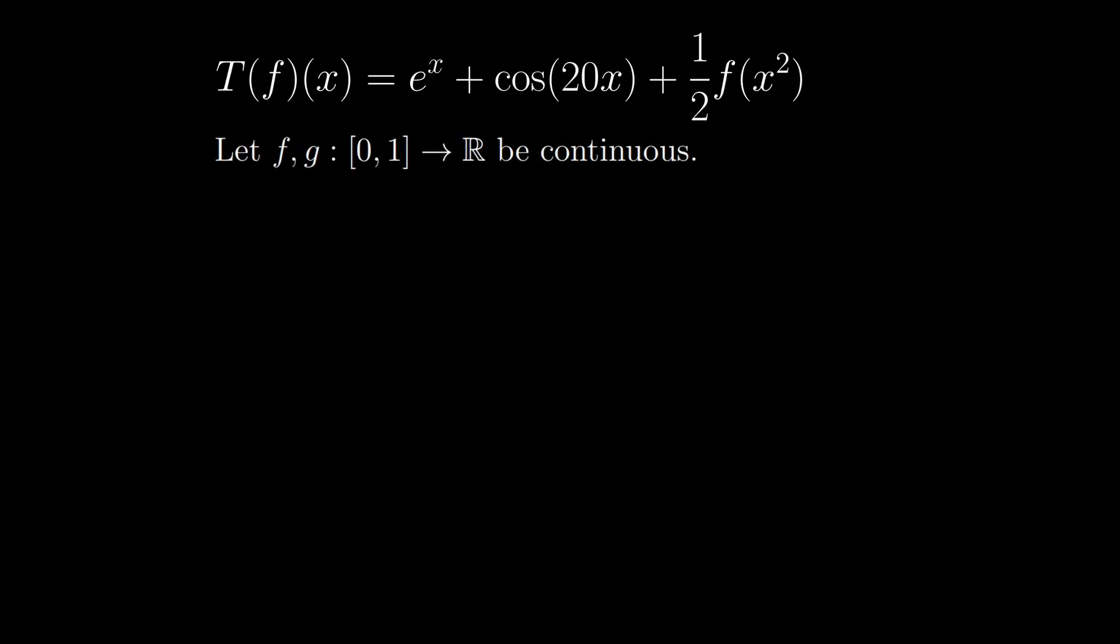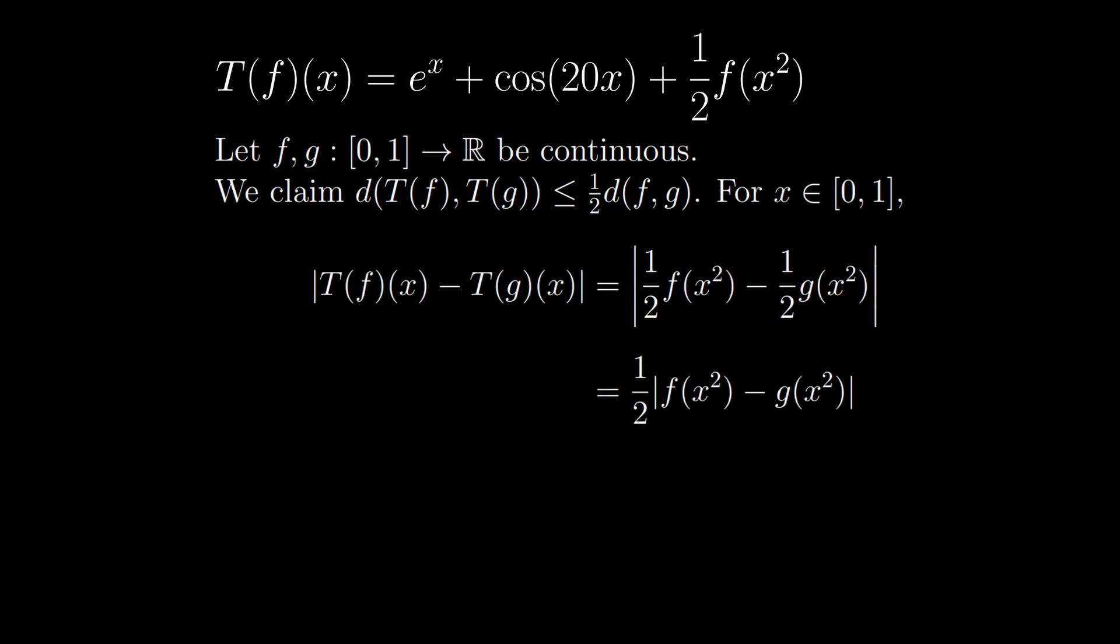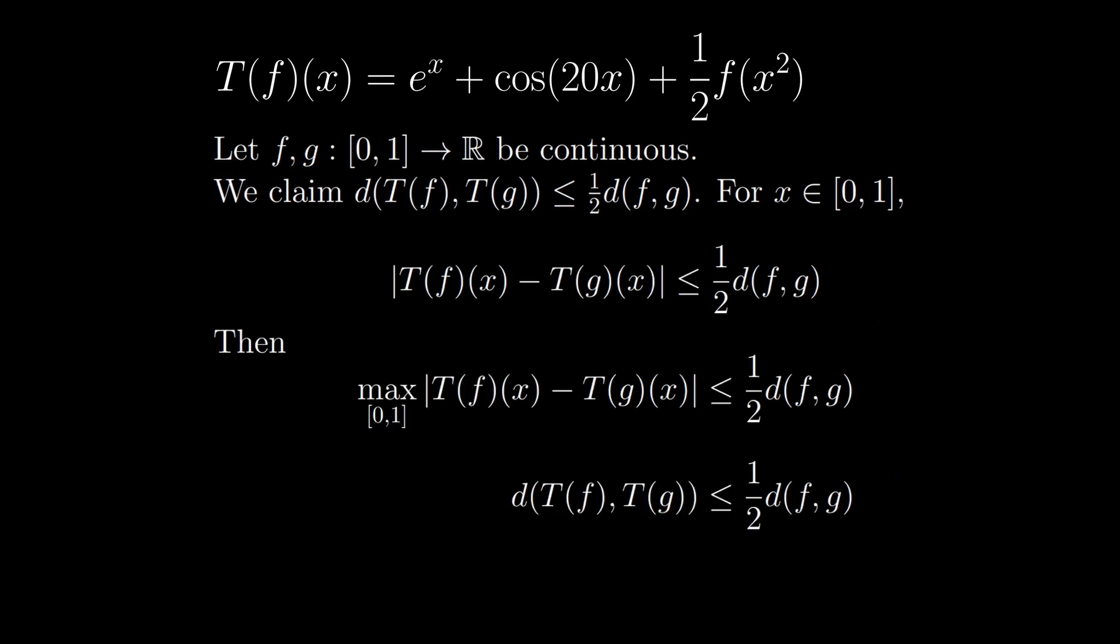Let's prove it. Let f and g be continuous functions on the interval 0, 1. We claim that T brings f and g closer together by at least a factor of a half. Okay, well for any x, the absolute value of T of f of x minus T of g of x is a half times the absolute value of f of x squared minus g of x squared. But since the distance between f and g is the max distance of their absolute values, this is at most half the distance between f and g. And since this was true for any x, the max distance between T of f and T of g is at most a half the distance between f and g.